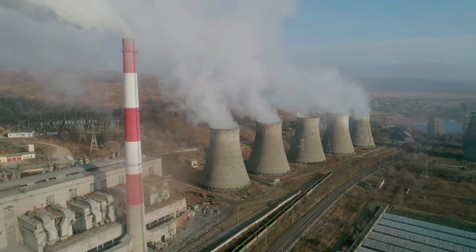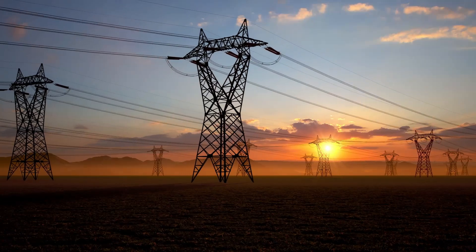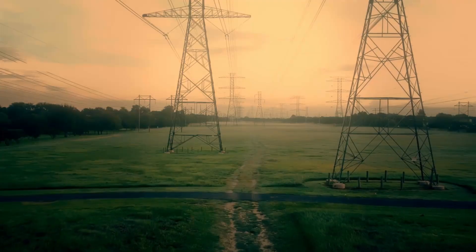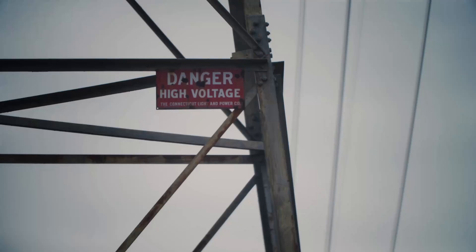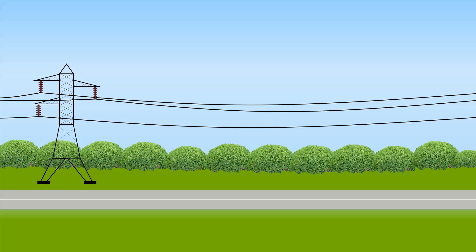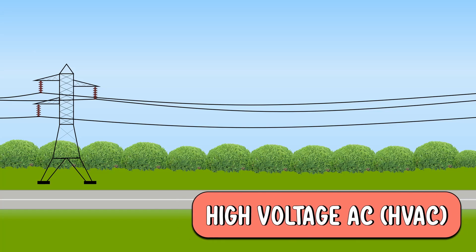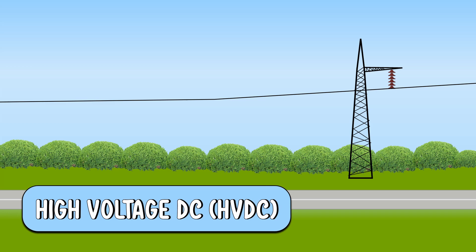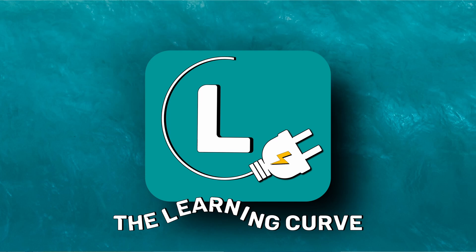Electricity is generated in power plants and transmitted through power lines. To reduce the losses, electricity is transmitted at very high voltages. We have a high voltage AC transmission system and a high voltage DC transmission system. In today's video, we are going to see 10 comparisons between these two. I am Benila and you are watching The Learning Curve.